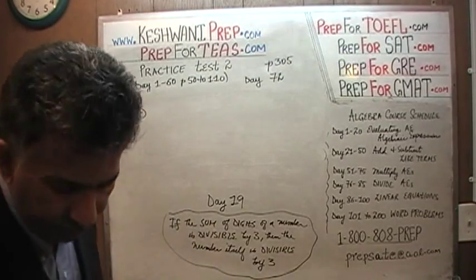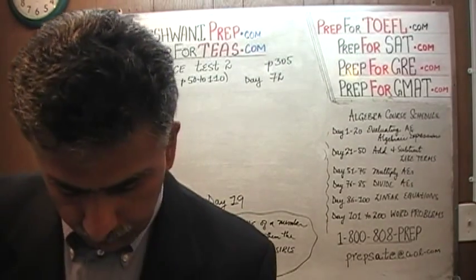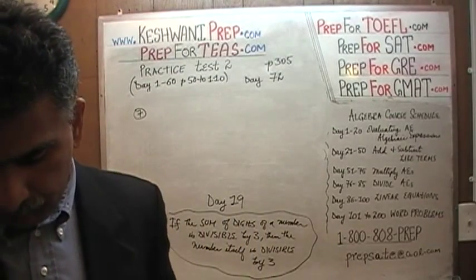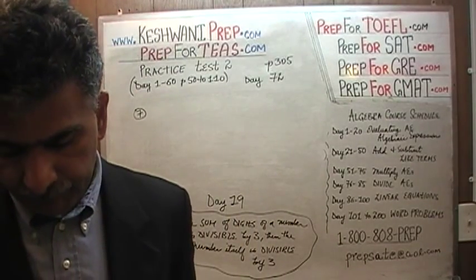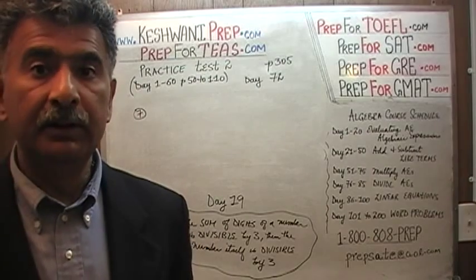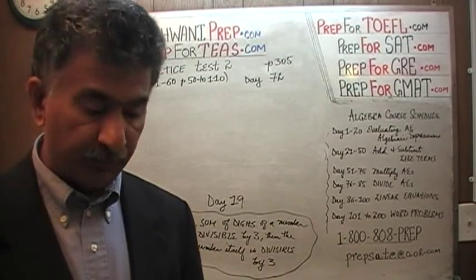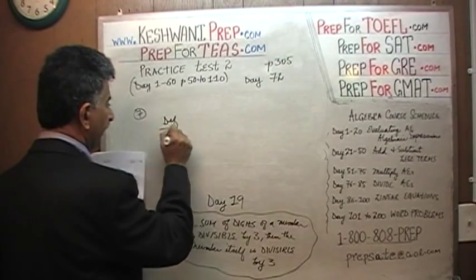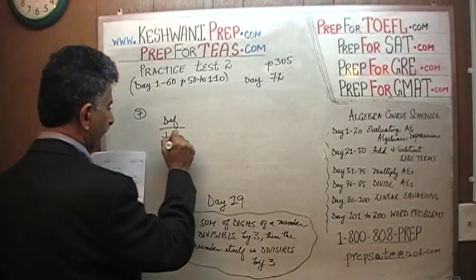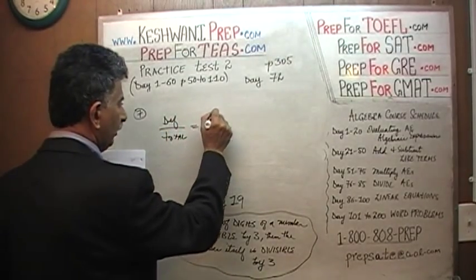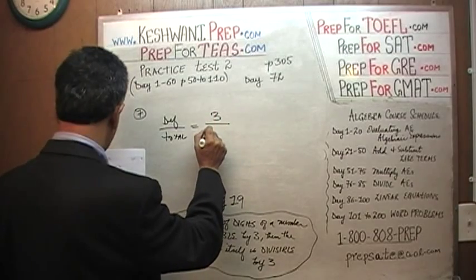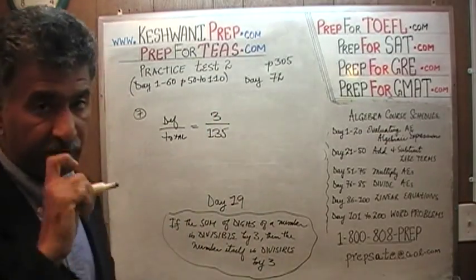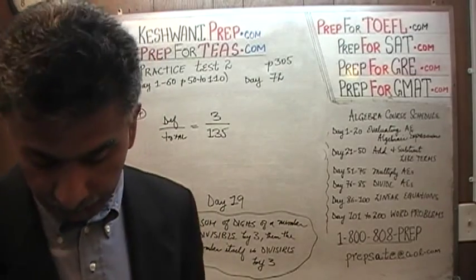In number 7, they tell us that during an 8-hour shift, a quality inspector found 3 defective CD players in a batch of 135 players. It's a proportion problem. We have defective players and total players, and we are told that 3 defective were found out of a total of 135. In a batch of 135 units, 3 of them were found to be defective.